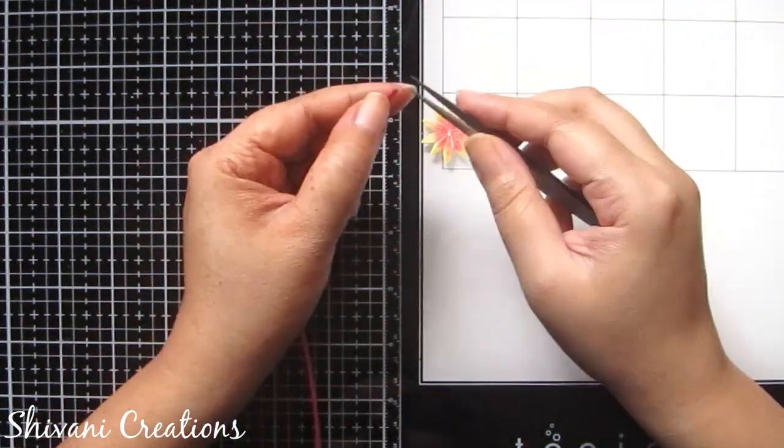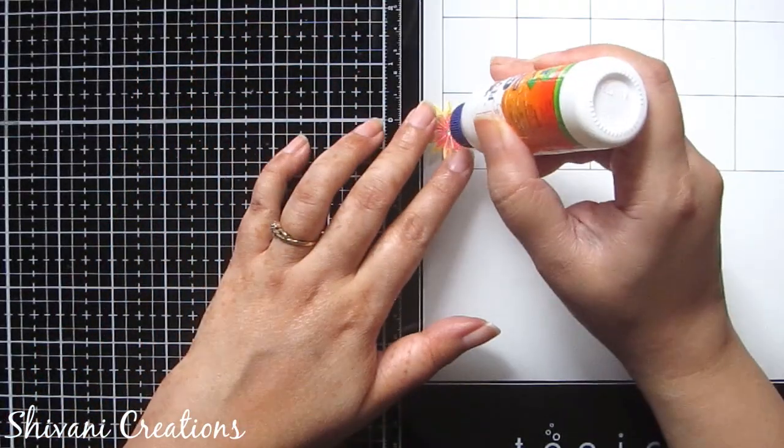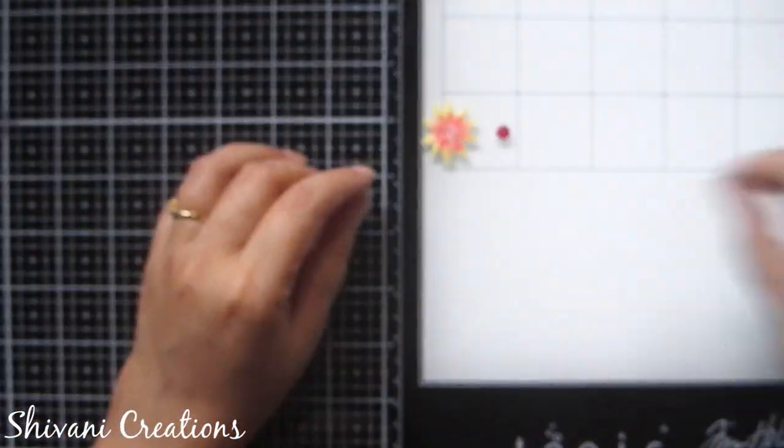So flower is ready. Now for the center of the flower I am taking half strip of pink color two mm and making one tight coil, just connecting in the center and flower is ready.